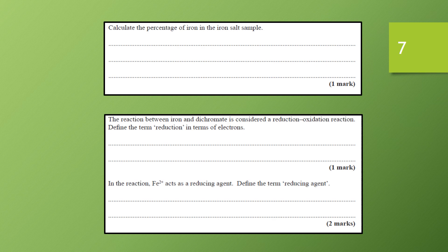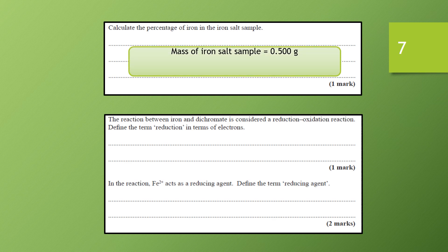In this part of the question we find the percentage of iron in the iron salt sample. 0.134 grams is coming from the iron, and the rest of the 0.5 gram sample comes from other components. To find the percentage: mass of iron divided by the total mass of the salt (0.5), multiplied by 100 to convert to percentage. That works out to be 26.8% iron in the iron salt sample.